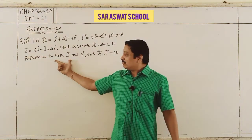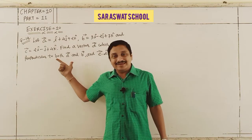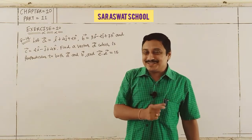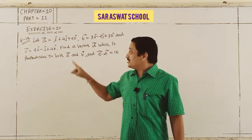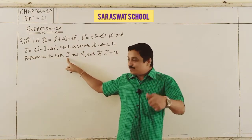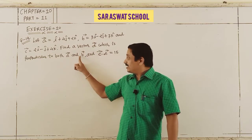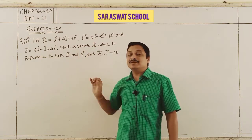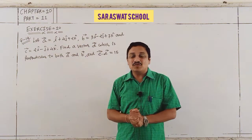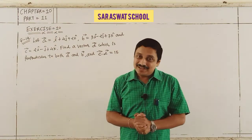What does perpendicular mean here? Yes, it means dot product equals 0 — so d dot a = 0 and d dot b = 0, and from that you can find the value of d.